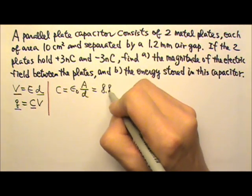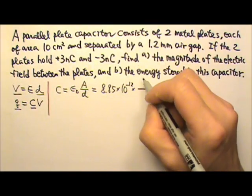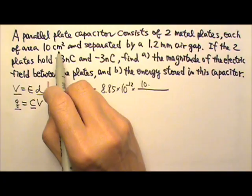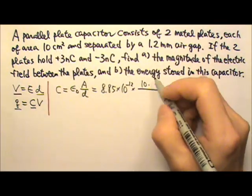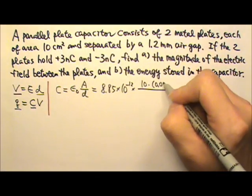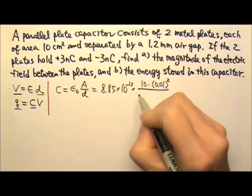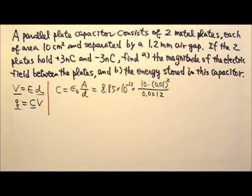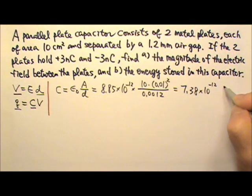The epsilon naught is 8.85 times 10 to the negative 12. And we got the plate area, that's 10 centimeters squared. And we do not want centimeters squared, we need everything to be in standard unit. So we have to replace the centimeters squared with what it is worth in meters squared. So I have to replace the centimeter, 1 centimeter is 0.01 meter. And because I have to square the centimeter, I have to square the 0.01. And then the plate separation is 1.2 millimeters, so that's 0.0012 meter. And this will give us a capacitance, that is 7.38 times 10 to the negative 12. And what's the unit for the capacitance? It is Farad.